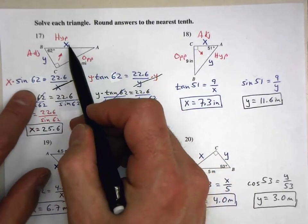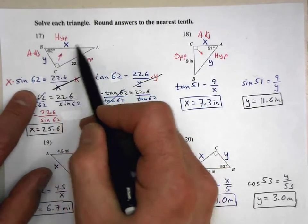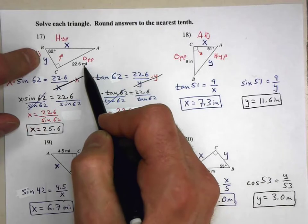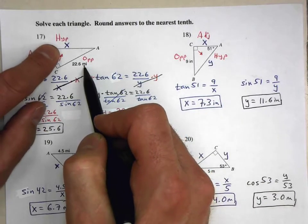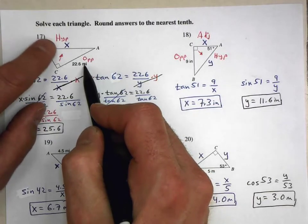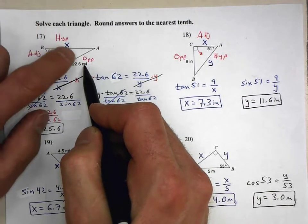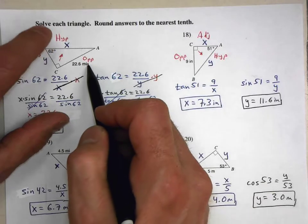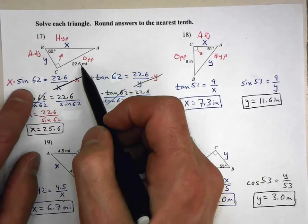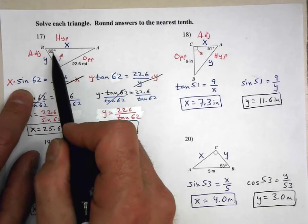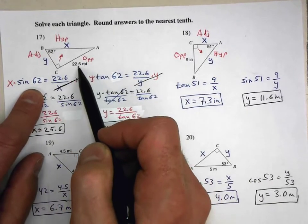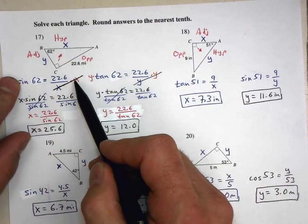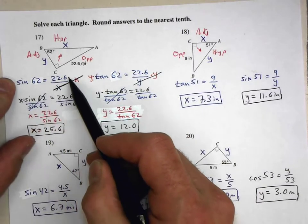Let's find the length of side x. I have the opposite side and I want to find the hypotenuse. What trig function uses opposite and hypotenuse? It is sine. So: sine of 62 equals opposite over hypotenuse, which is 22.6 over x. So sine of 62 equals 22.6 over x.